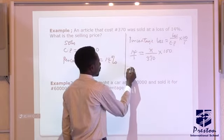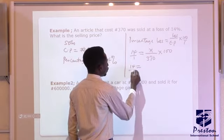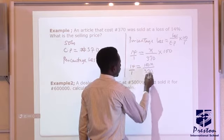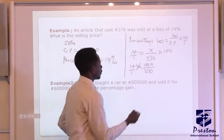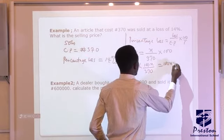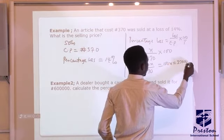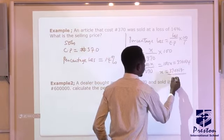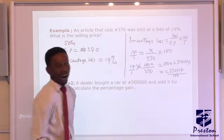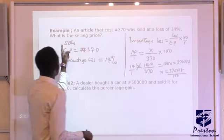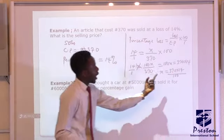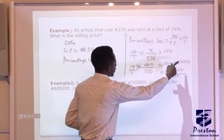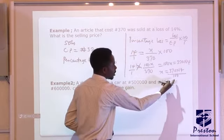From here, we cross-multiply: 14 over 1 equals 100x over 317. Cross-multiplying gives 100x equals 317 times 14. Therefore x equals 317 times 14 divided by 100. Whatever we get for x represents the loss. But the question asks for the selling price, so we subtract x from the cost price. Cost price minus loss gives us the selling price.